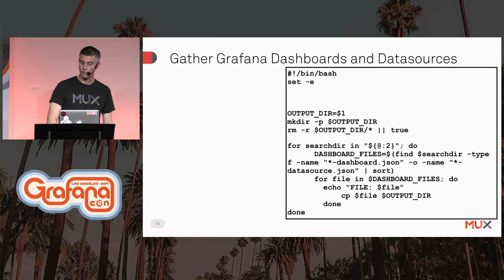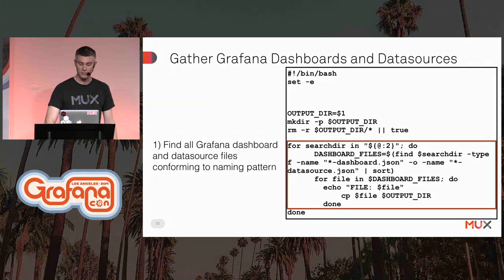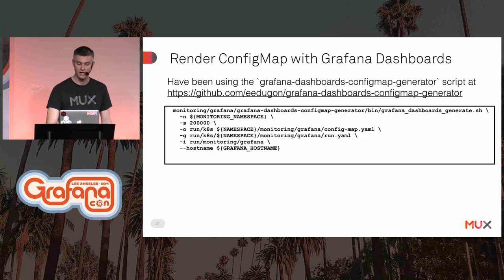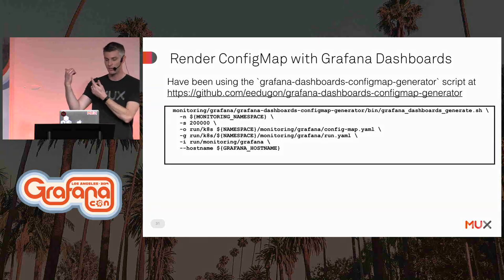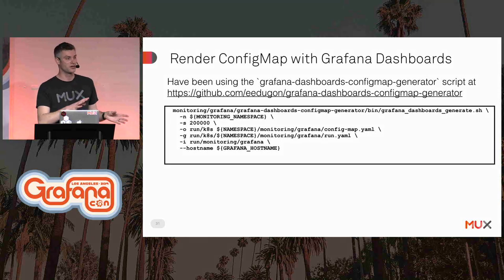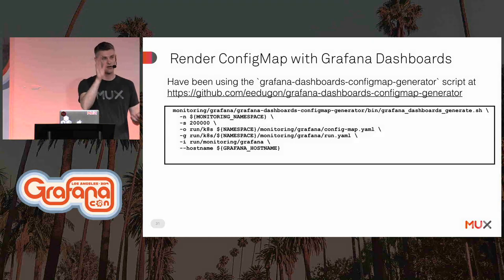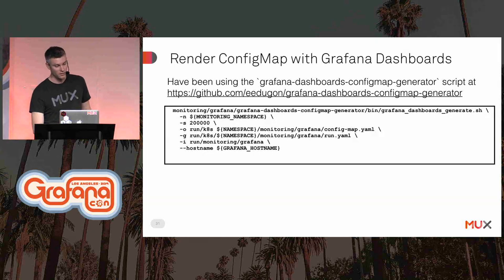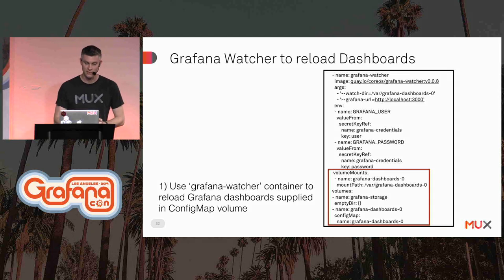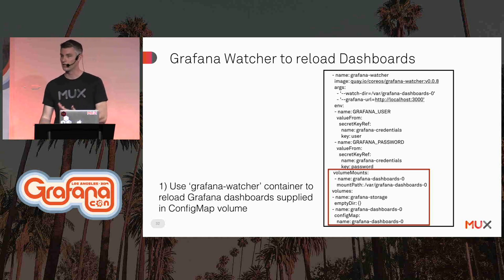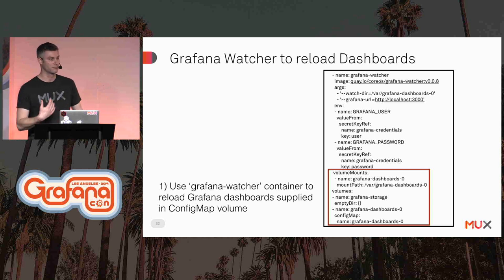A similar process works for Grafana dashboards and data sources. We find all dashboards following our naming convention, copy them to a staging directory, then use the Grafana Dashboards ConfigMap Generator project — the GitHub repo — which takes all those dashboards and creates a Kubernetes ConfigMap describing them. Then we use Grafana Watcher, also from CoreOS, which watches the Kubernetes ConfigMap volume for changes. When it detects changes, it makes an API call into Grafana to reload those dashboards.